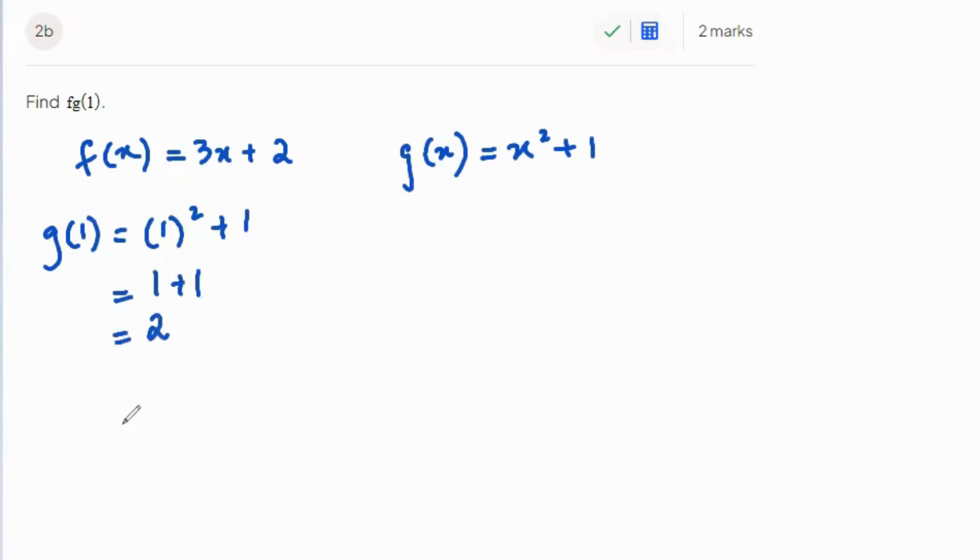Now we substitute g(1) in f(x). So f(g(1)) is basically going to be f(2). That means 3 times 2 plus 2, which is 6 plus 2, and that equals 8. That is your answer.